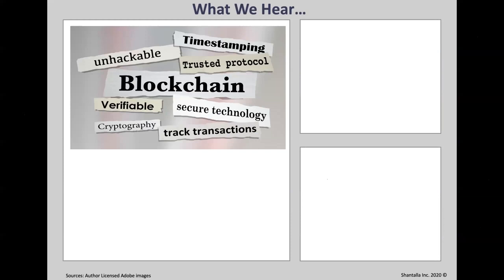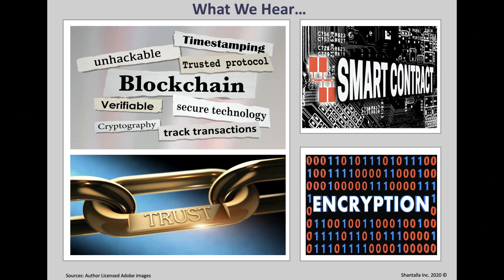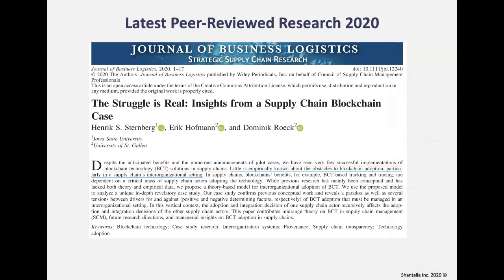What we hear about blockchain: it's a trusted protocol, unhackable, verifiable, cryptographic, able to track transactions, and very secure. We also hear about smart contracts, encryption, and trust all wrapped together. My caution: blockchain does not imply smart contract. Smart contracts is a separate concept that predates Bitcoin blockchain by 11 years — many banks and insurance companies are already using smart contracts without blockchain. Encryption also predates Bitcoin blockchain by many years and is part of the cryptography family.